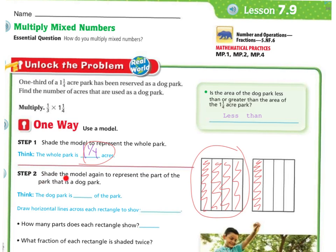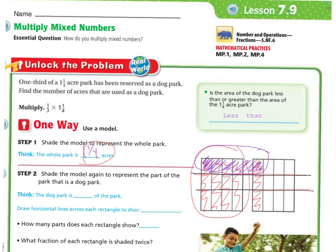Then we shade the model again to represent the parts that are the dog park. The dog park is one-third, so if I break this up into thirds — let me use a different color — I break these up into thirds, and then I only need to shade one-third of that. So this is one-third right there — one-third of the dog park. I drew a horizontal line across to show the thirds.